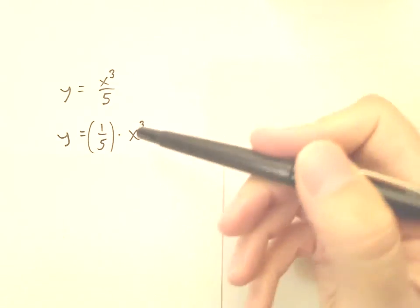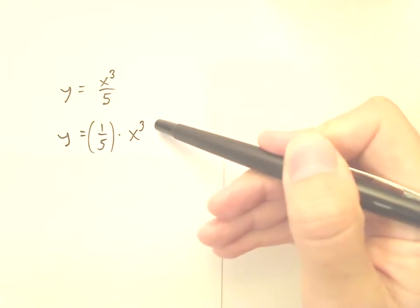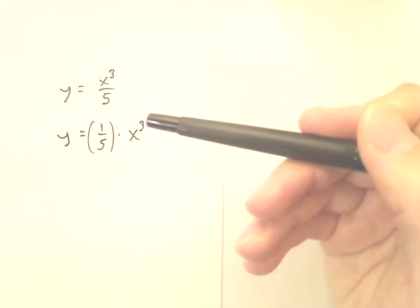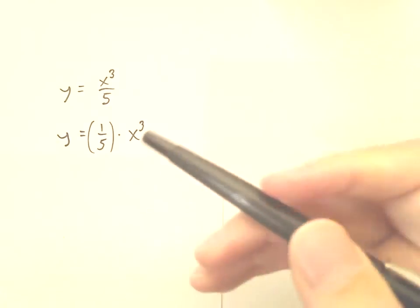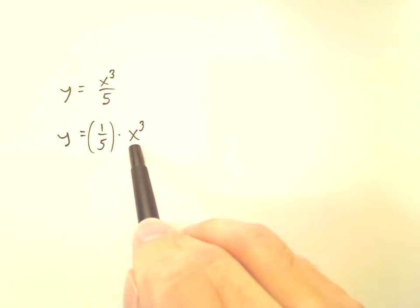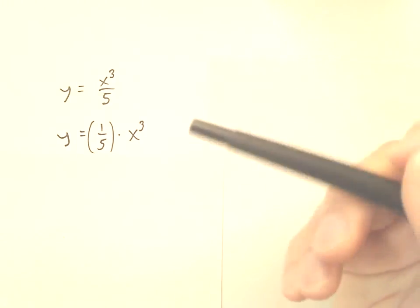So if you rewrite the expression this way as 1/5 times x cubed, you'll find that you no longer have a quotient rule problem. It's just a plain old power rule. This 1/5 times x cubed behaves no differently than any other constant like 2 times x cubed or 7 times x cubed, and you should know what to do with that.